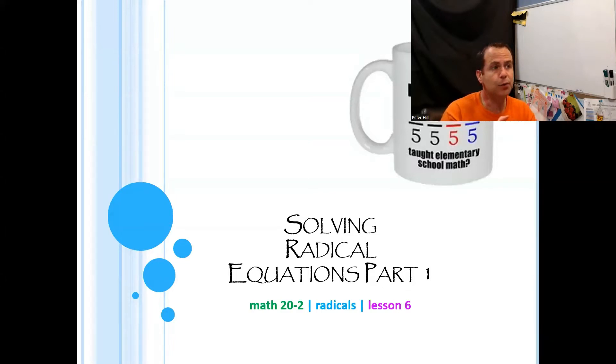With radicals, the way we do that is often what happens is a variable is underneath the radical sign. It's part of the radicand. And so we have to get rid of the radical. Well, to get rid of a square root, you would want to square both sides. To get rid of a cube root, you'd want to cube both sides. The one kind of extra item with solving radical equations is you actually have to check your answer. We call that verification. You have to actually verify that the answer that you got actually works in the equation.